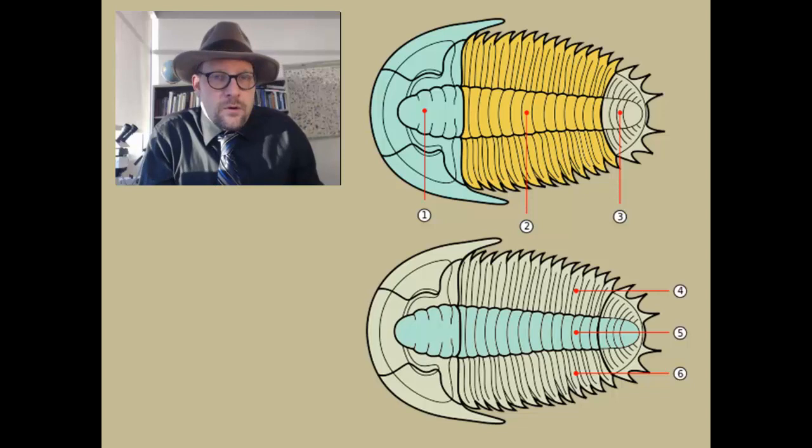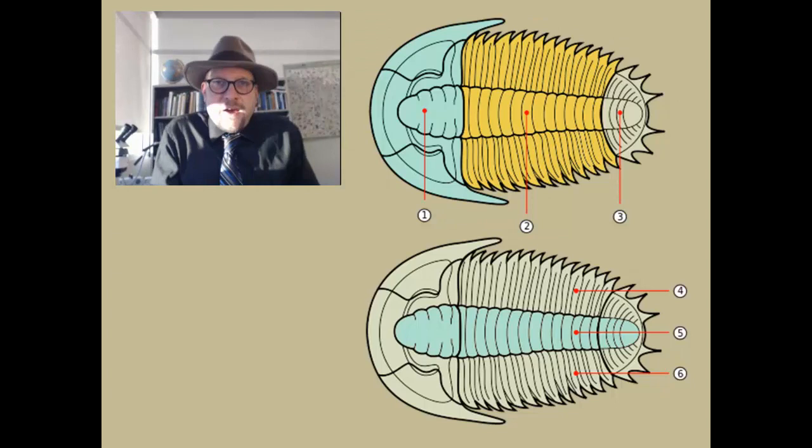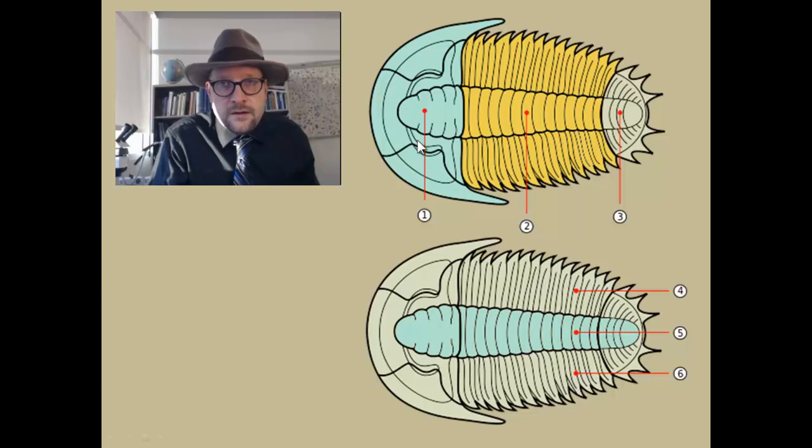Alright, so let's look at some of the anatomical features of trilobites and define some useful terms. The trilobite body is divided into three major sections. It has the cephalon up here—the head—the thorax, this middle part, and it has the pygidium, which is the bottom part, the butt of the trilobite.